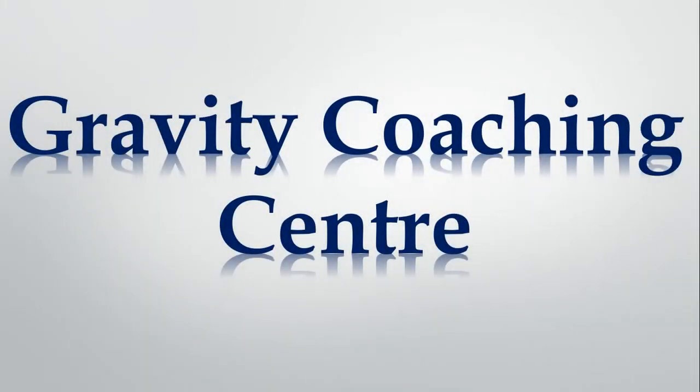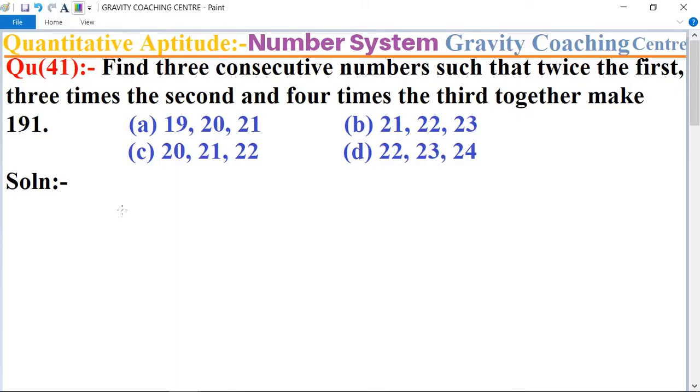Welcome to our channel Gravity Coaching Center, Quantitative Aptitude chapter Number System. Question number 41: Find three consecutive numbers such that twice the first, three times the second, and four times the third together make 191.